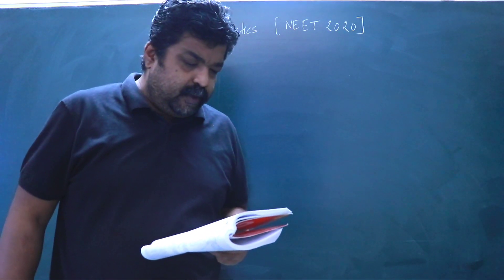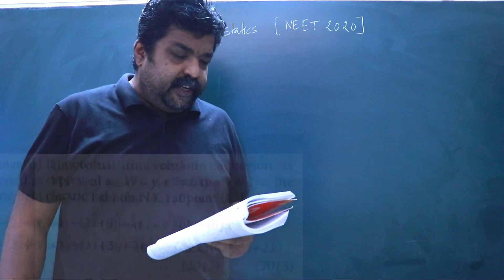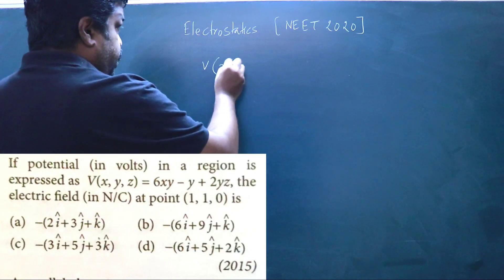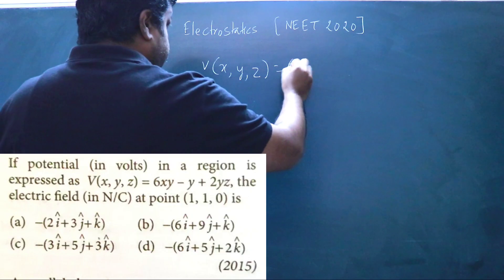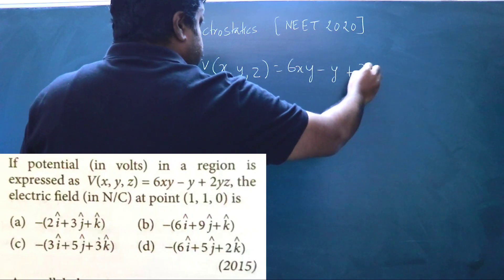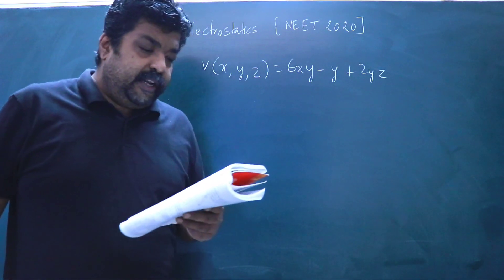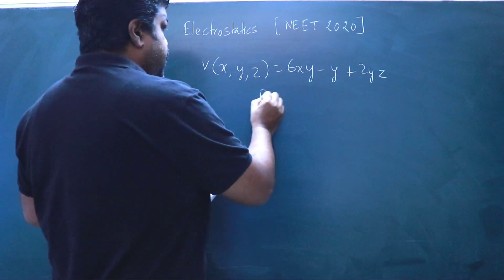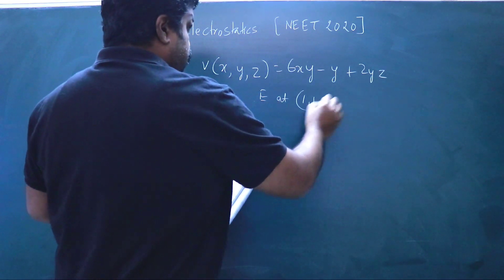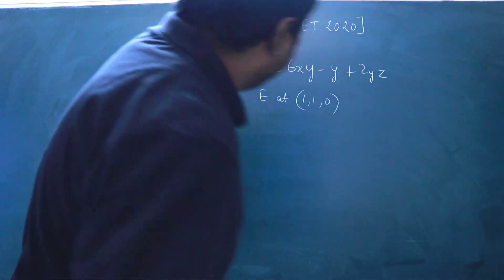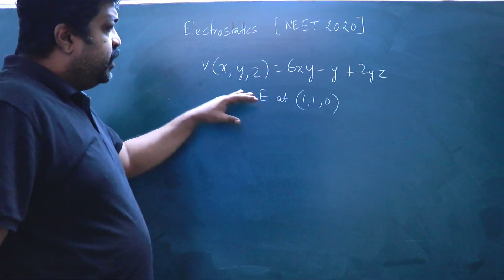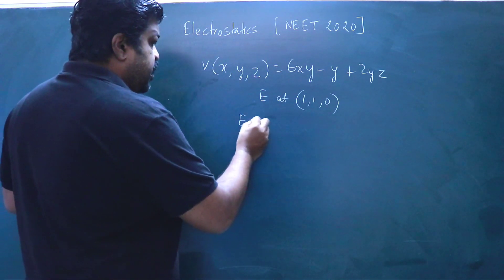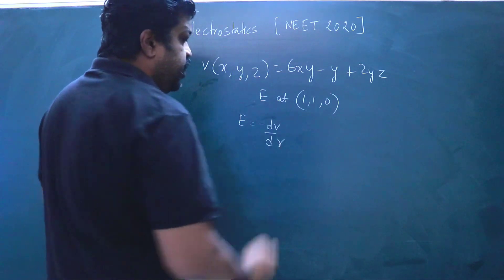This question is from NEET 2015. The electric potential in a region is expressed as V(x, y, z) = 6xy − y + 2yz. We have to find the electric field in Newton per Coulomb at the point (1, 1, 0). The relation between electric field and potential is that the electric field is the negative gradient of electric potential.